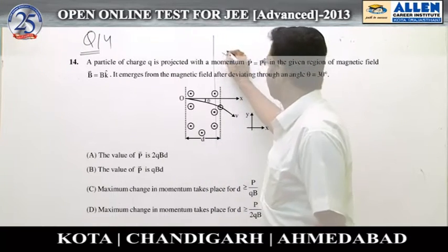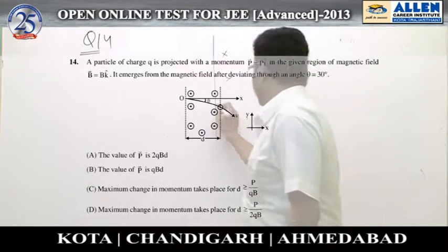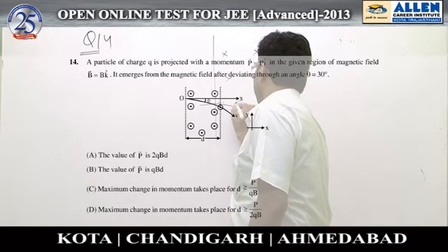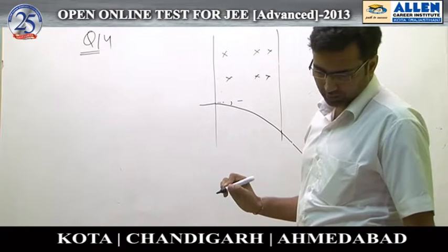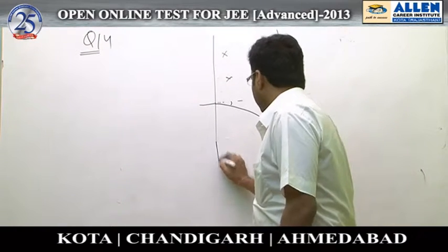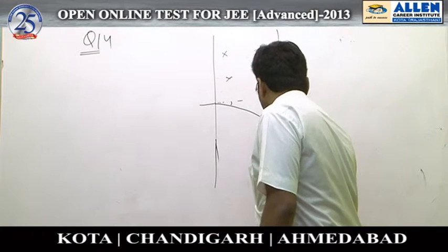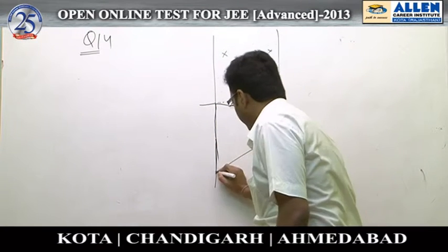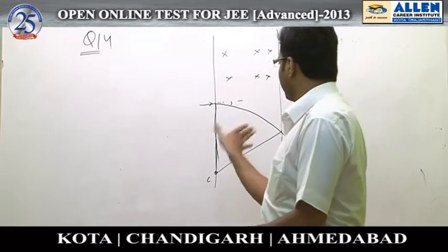Consider the field region shown. As the particle is projected, it turns and comes out like this, this being the deviation. The value of momentum is to be calculated keeping in mind that this becomes a circular arc, of which the center will be here. Once it enters, the force is along this line using the relation v cross B.